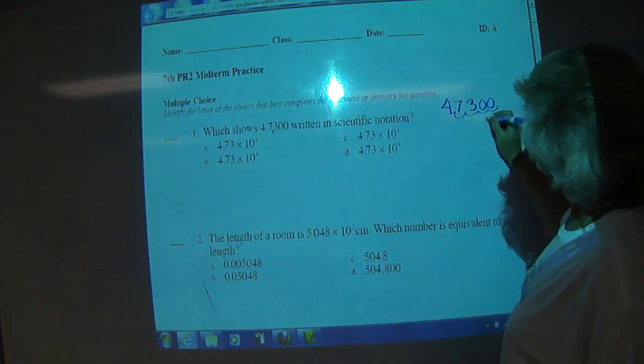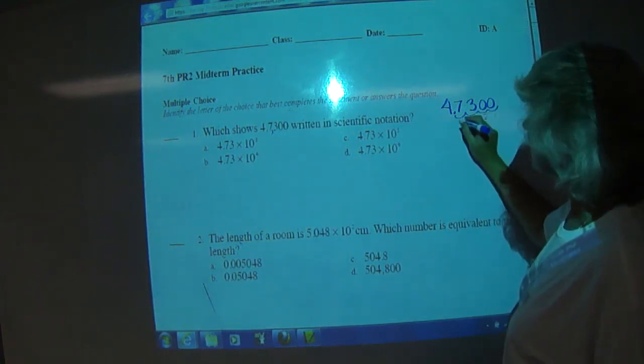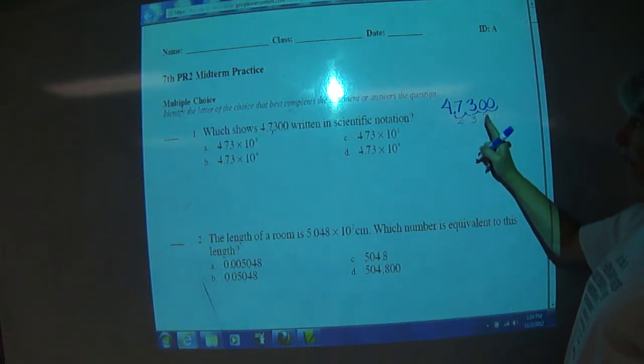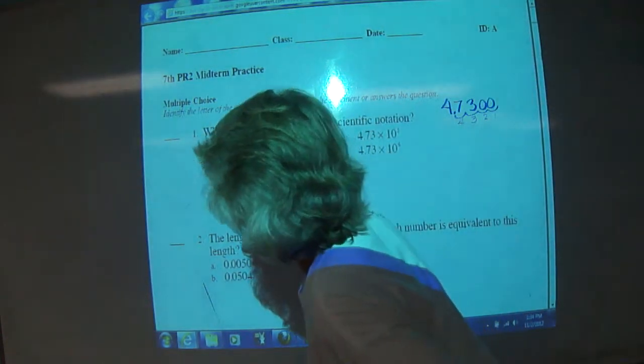This is Beyonce stuff, one, two, three, four places. So we have 4.73 times 10 to the one, two, three, four, and our answer is B.